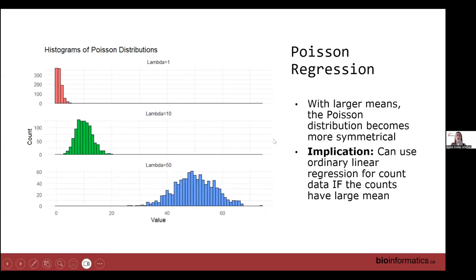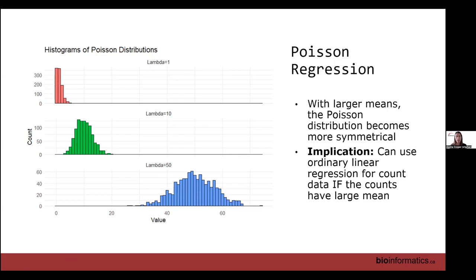One thing to note: sometimes people fit a regular linear model to count data. If we have a common enough event where counts are very large, the distribution starts to resemble the normal distribution. If lambda equals one (rare event), the distribution is very right skewed. But as lambda becomes 10 or larger, it becomes more symmetrical, and you can start using a linear model without seeing violations of assumptions.